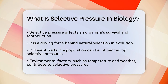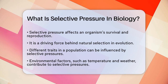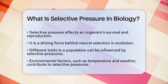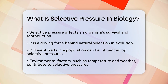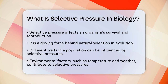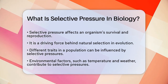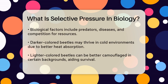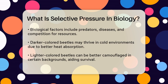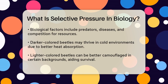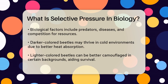a key process in evolution. Imagine a population of beetles with different colors. In this scenario, the environment and other organisms can exert selective pressures that influence which color beetles are more likely to thrive. For example, if the environment is cold, darker-colored beetles might have an advantage because they can absorb more heat, which helps with thermoregulation and metabolism. On the other hand, lighter-colored beetles might be better camouflaged on a light background, making them less visible to predators. This is how selective pressures can favor certain traits over others.